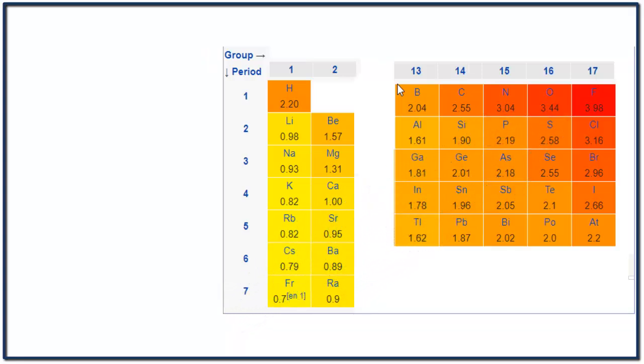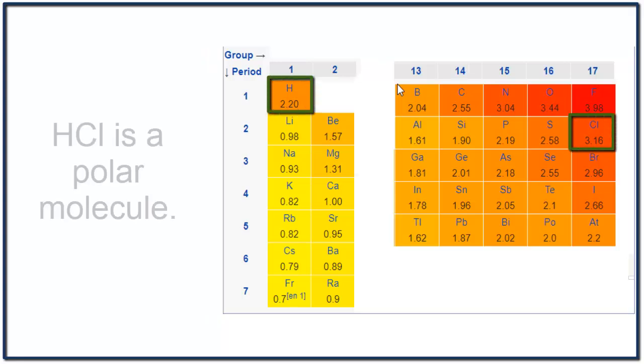For group 18, the noble gases, they rarely form chemical bonds, and we don't really consider their electronegativity to be important. So we know HCl is a polar molecule with its difference in electronegativity greater than 0.5 but less than 2.0.